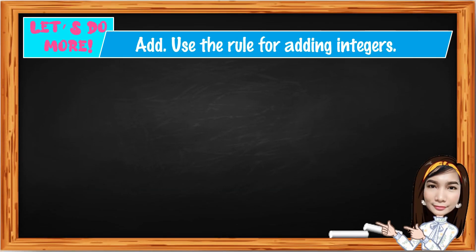Let's do more. Use the rule for adding integers. Number 1: 6 plus 5. They are both positive, so the answer is positive 11.